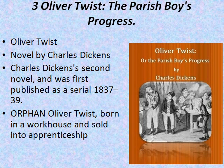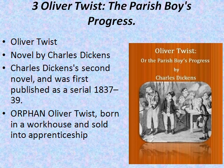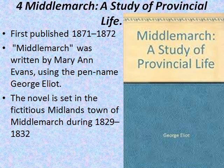The next one is Oliver Twist, or The Parish Boy's Progress, which is the subtitle. It is Charles Dickens' second novel, first published as a serial from 1837 to 1839. The story centers on an orphan, Oliver Twist, who was born in a workhouse and was further sold into an apprenticeship with an undertaker.